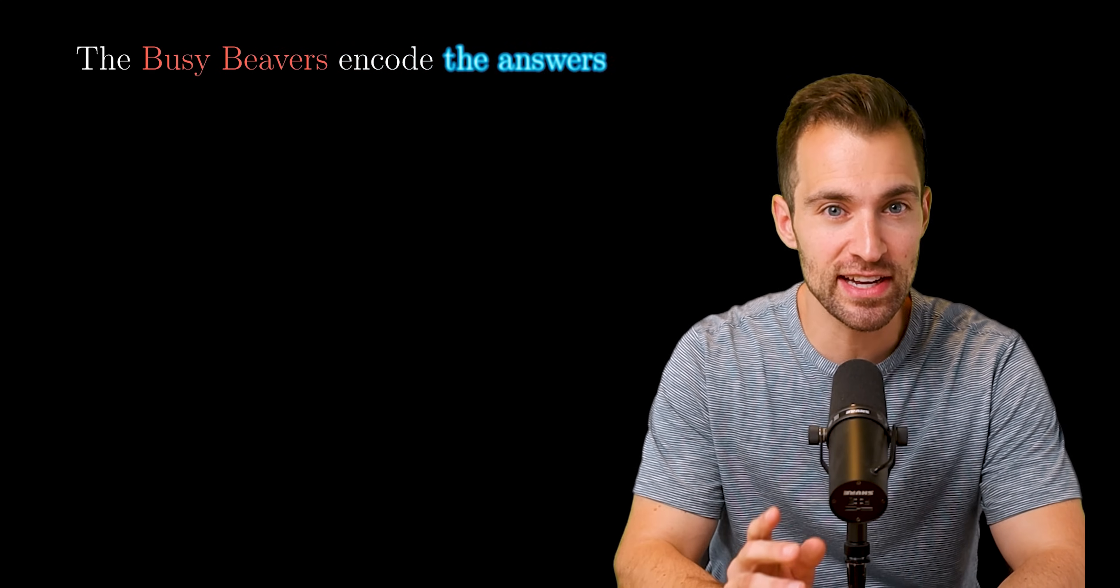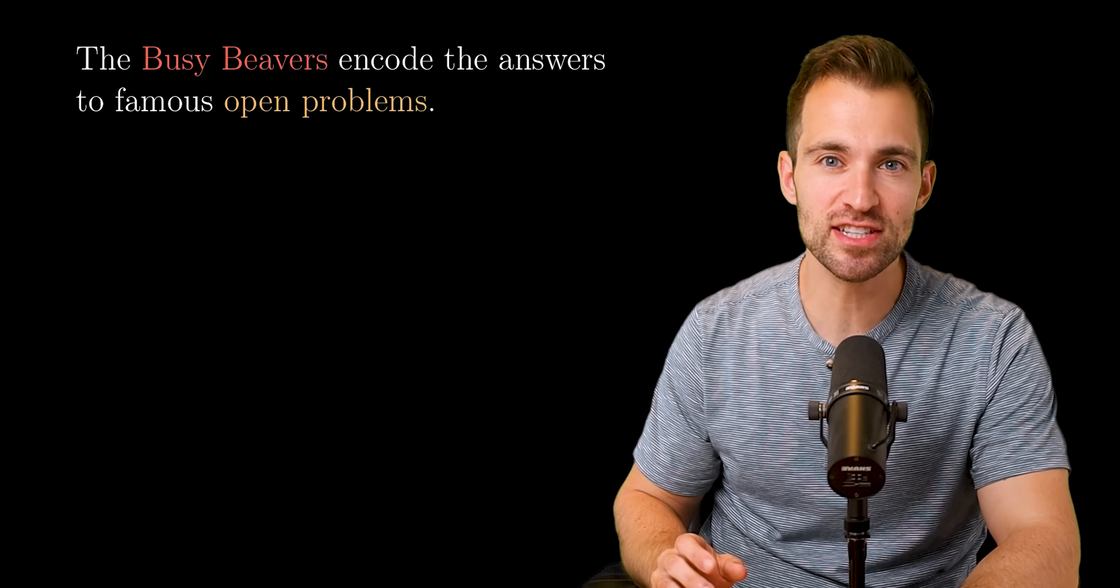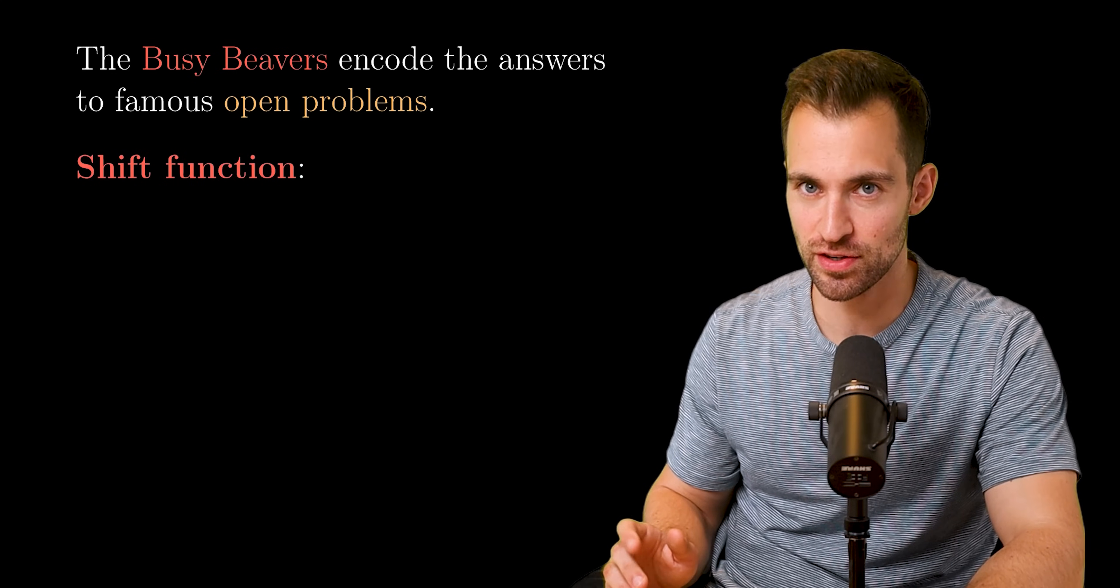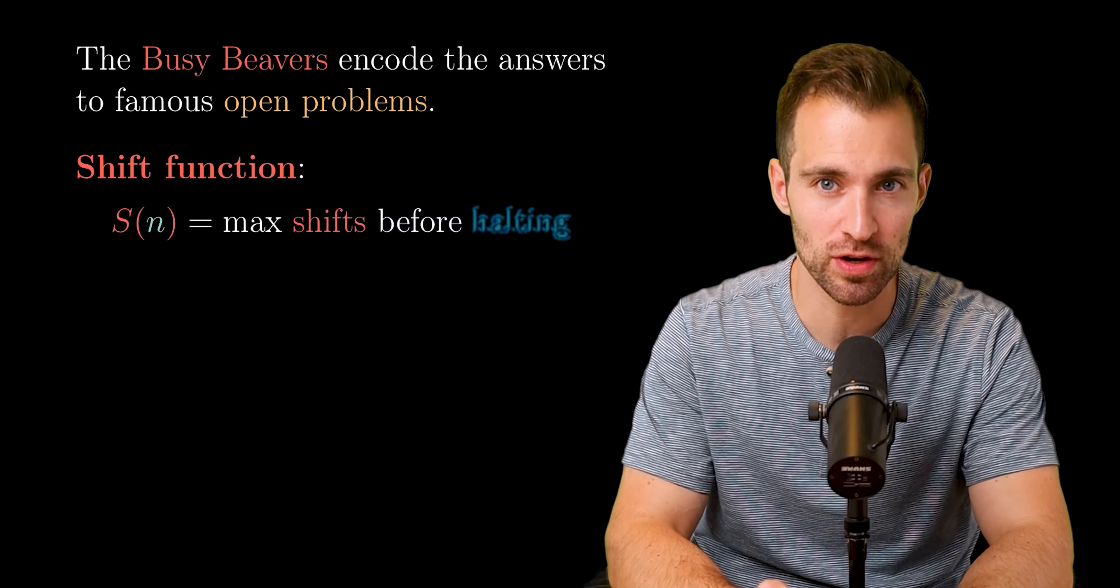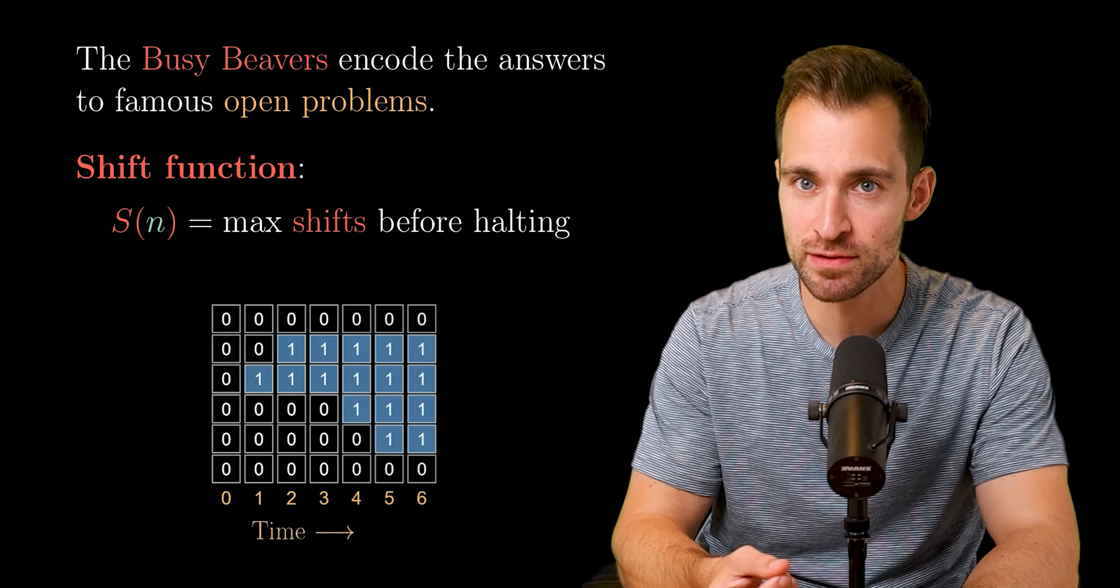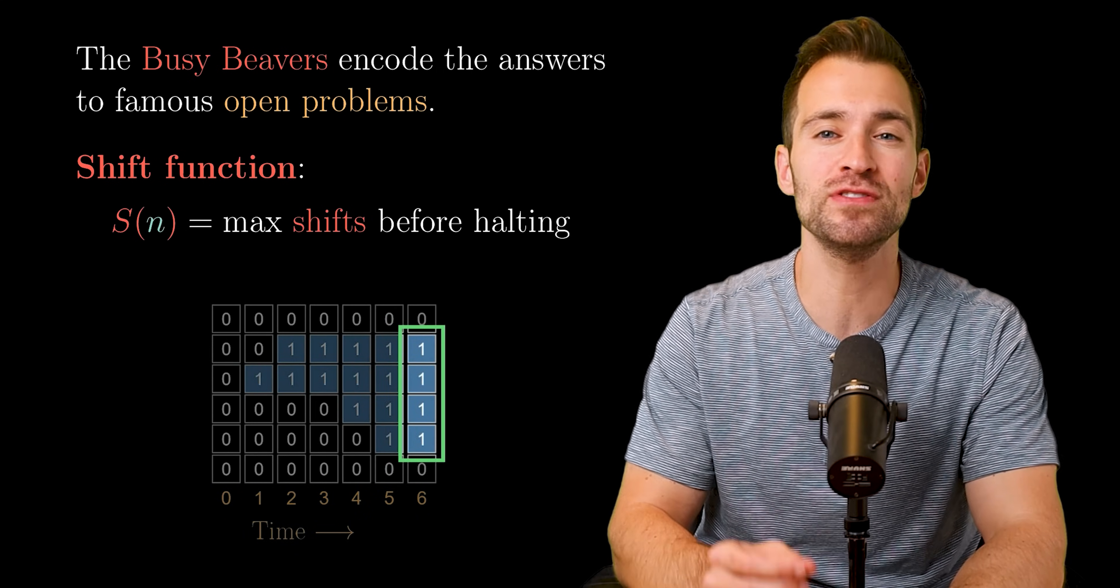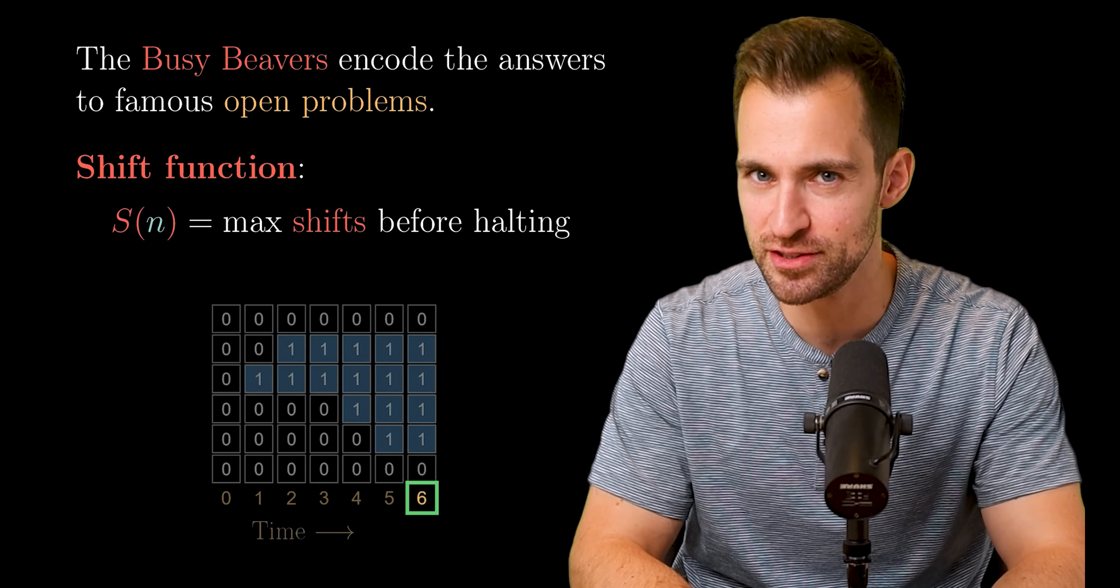So if we don't know the busy beaver algorithms for larger n, what else can we say? Well, in the last video, we discovered that the busy beavers encode the answers to famous open problems in mathematics. To dig into this, let's discuss a new function that is also called the busy beaver function, the shift function, S(n). It counts the max number of times the machine shifts before halting. So earlier, when we saw tape histories, instead of looking at the number of ones written, we're looking at the number of steps taken. This function is similarly pathological to the ones function, but it'll be easier to work with.